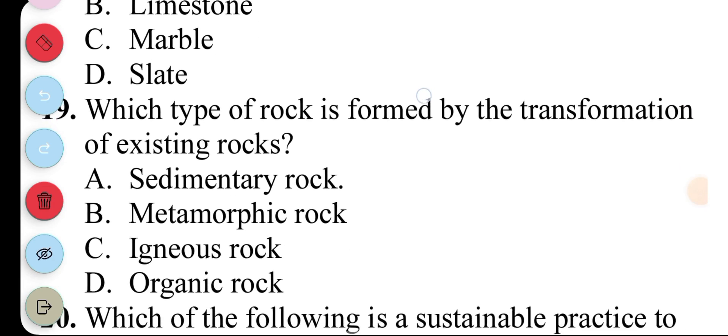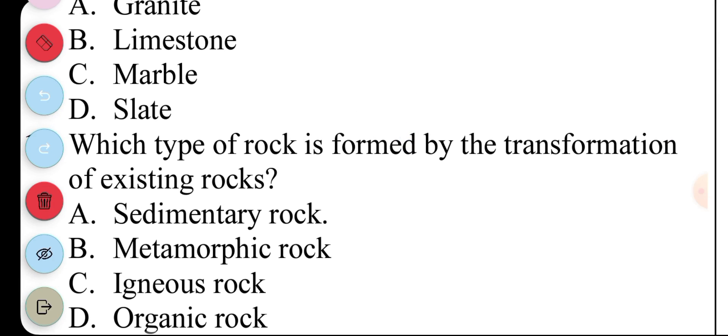Question 19. Which type of rock is formed by the transformation of existing rocks? A. Sedimentary rock, B. Metamorphic rock, C. Igneous rock, D. Organic rock. The answer to question 19 is B. Metamorphic rock.